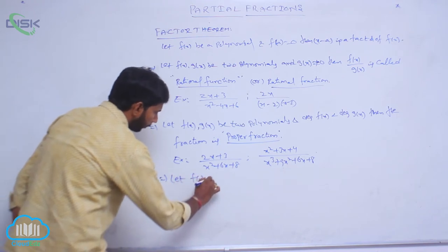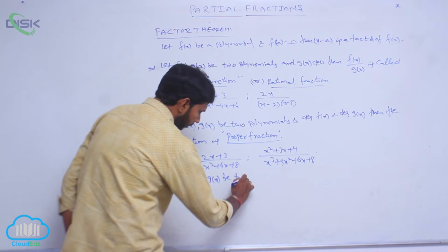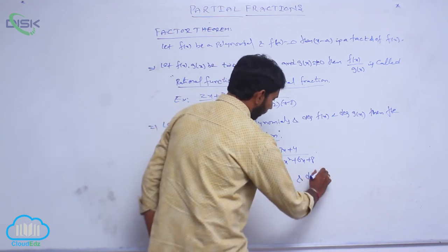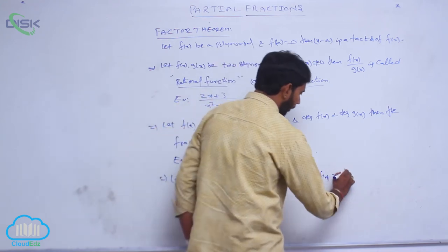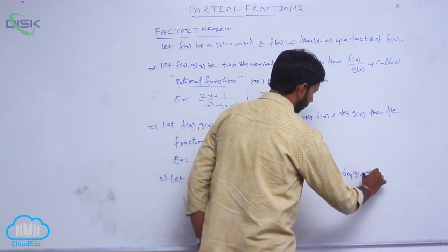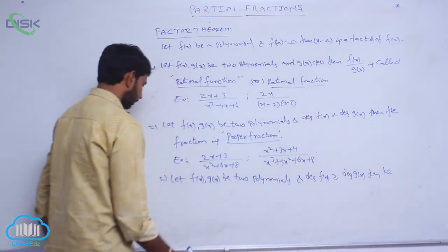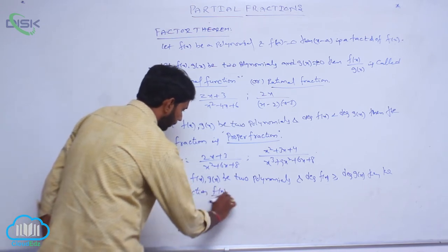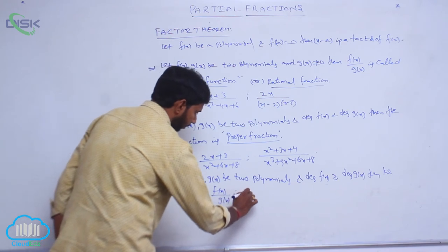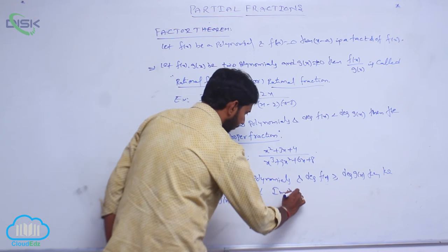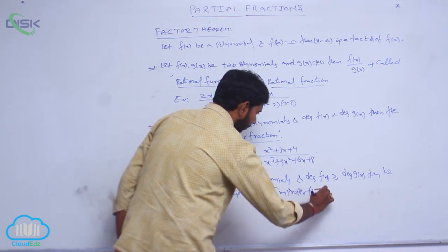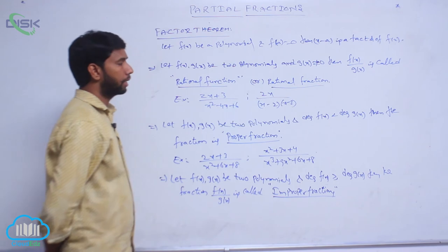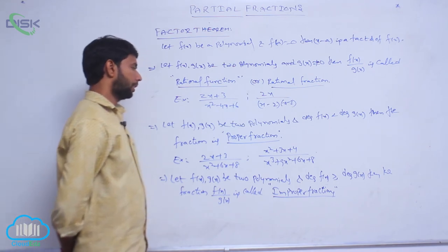Let f of x, g of x be two polynomials and the degree of f of x is greater than or equal to the degree of g of x. Then the fraction f of x by g of x is called an improper fraction. That is, degree of numerator is greater than or equal to degree of denominator.